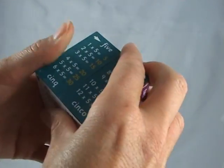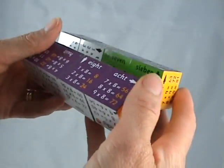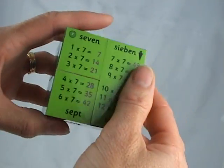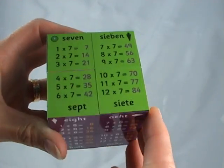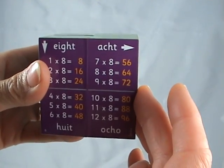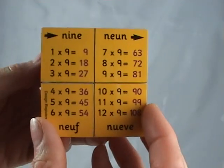Turn the cube inside out to find the green dot again, and start with the 7x table, the 8s, the 9s.